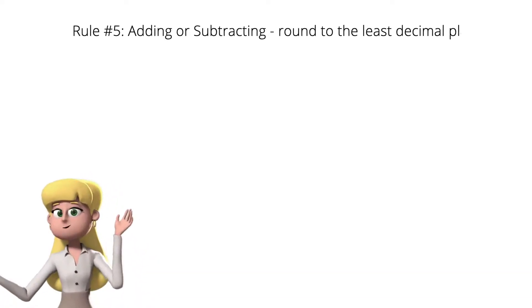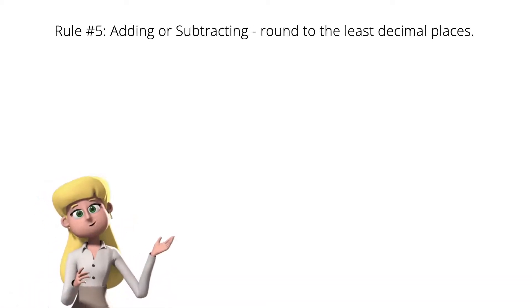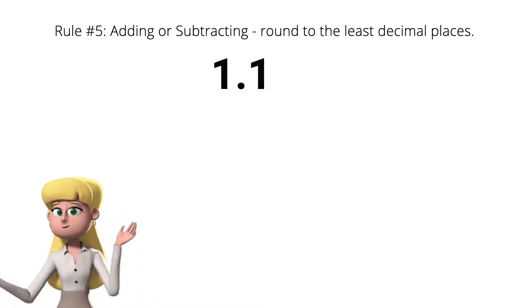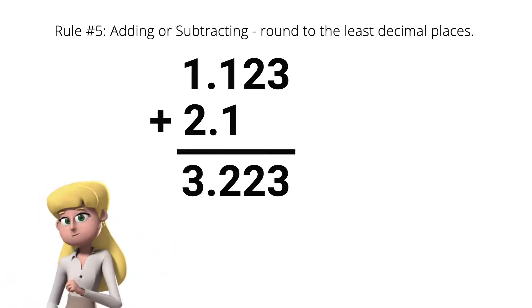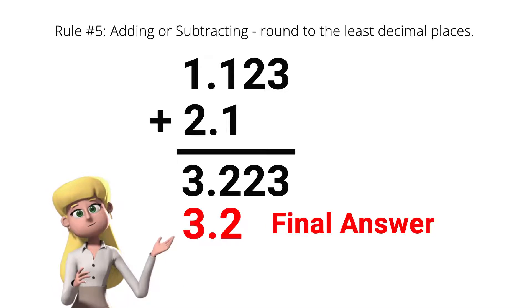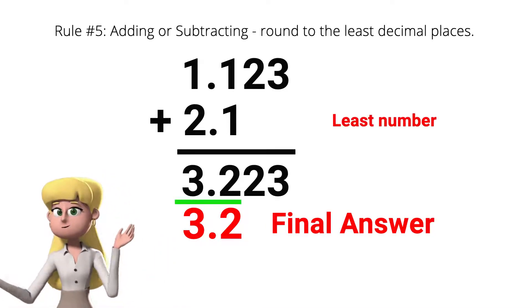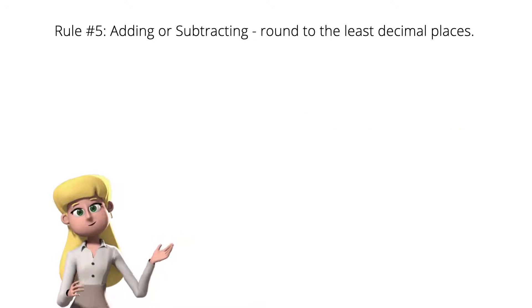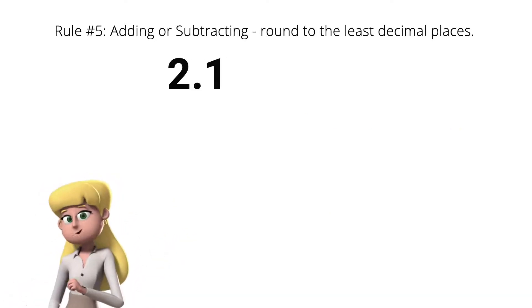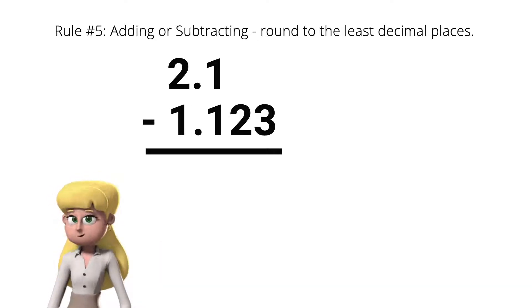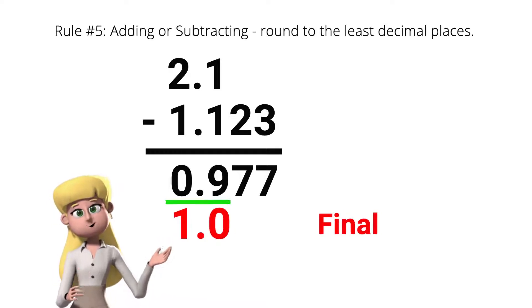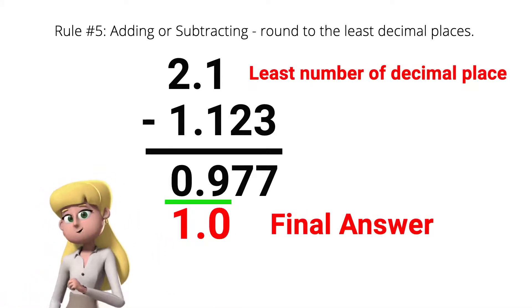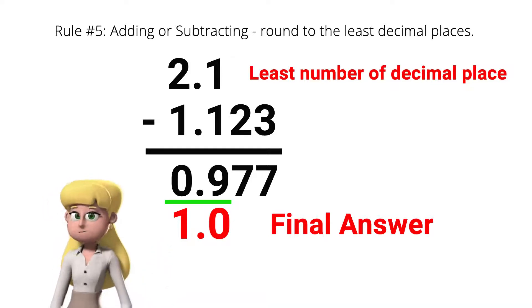Moving on to rule number 5. When adding or subtracting numbers, we must round the final answer to the least number of decimal places. If I add 1.123 plus 2.1, we get 3.223, but the final answer must be 3.2, because 2.1 has 1 decimal place and has the least number of decimal places. Same thing with subtraction: if I subtract 1.123 from 2.1, we get 0.977, but the final answer must be in 1 decimal place, so we round up 0.977 to 1.0, because of the digit 7 next to digit 9.